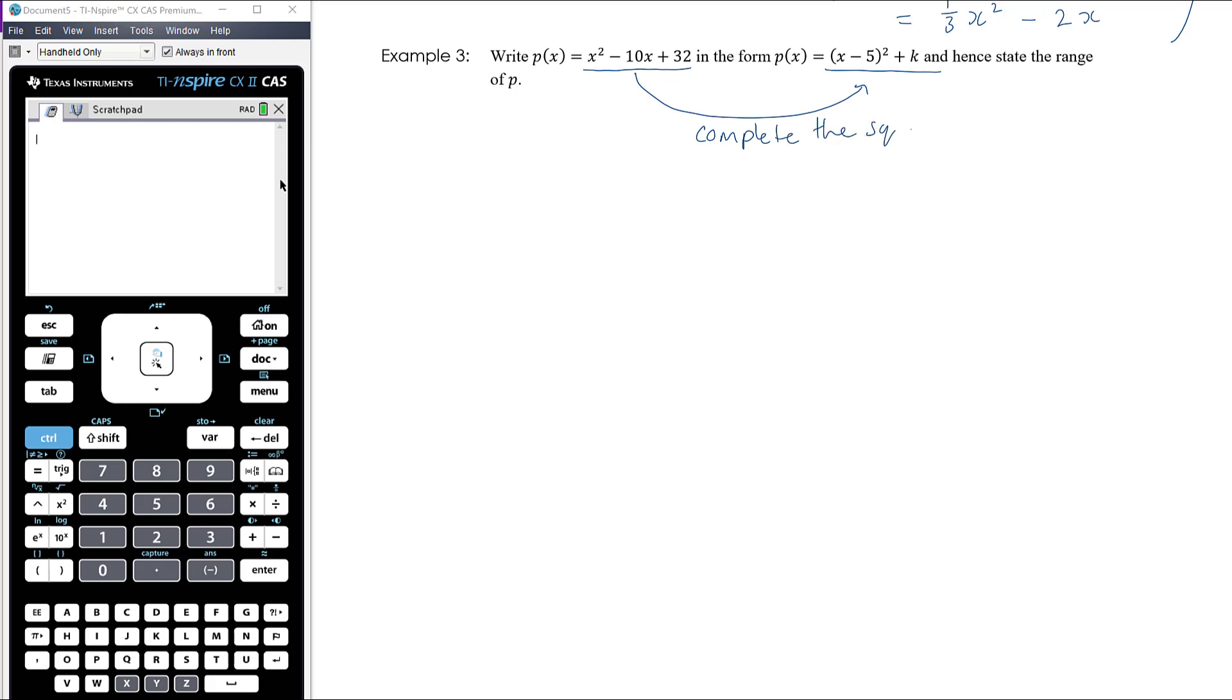So let's start with that. We know that p(x) is x² - 10x—let's leave room to complete the square there—and plus 32. So if we want to complete the square, we're halving and squaring -10: half of -10 is -5, squared is plus 25. So we're adding and taking away 25 to create that perfect square.